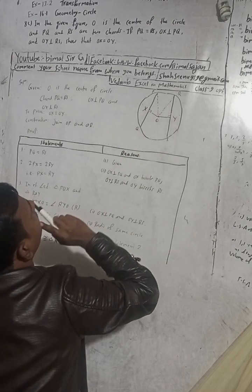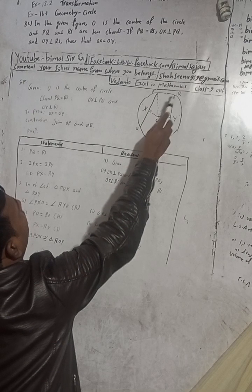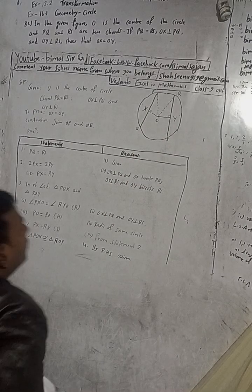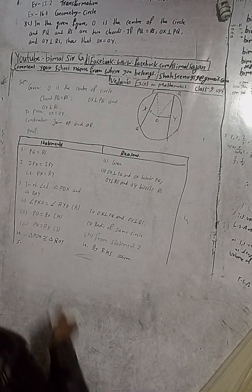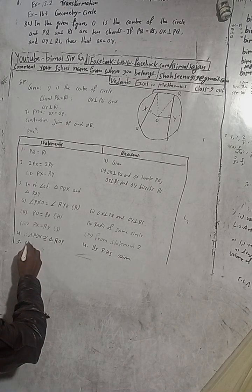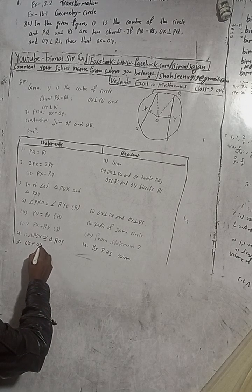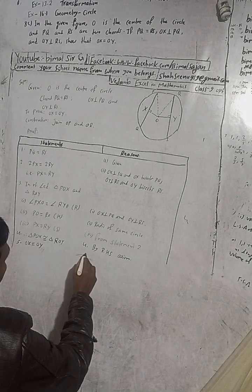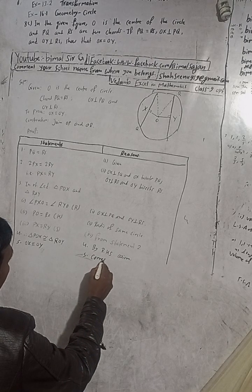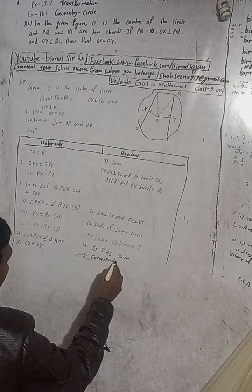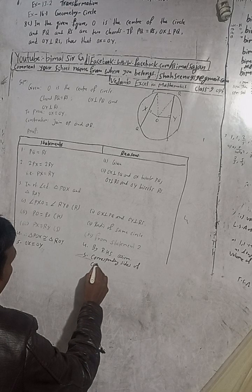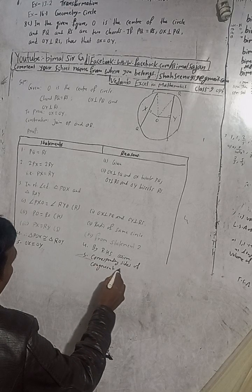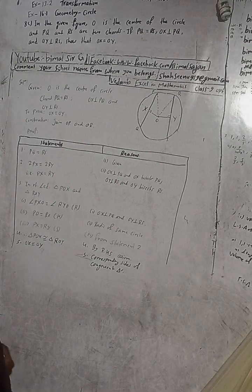Corresponding sides of congruent triangles are equal. Therefore OX is equal to OY. Hence proved.